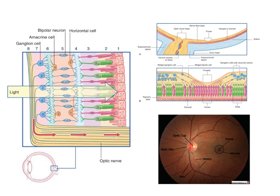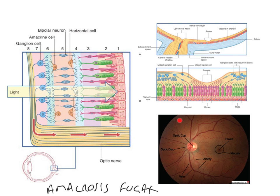Another condition you need to be aware of is amaurosis fugax — a sudden transient loss of vision. It's caused by a transient ischemic attack: a small embolus temporarily blocks the ophthalmic artery, which enters at the optic disc and branches out to supply all parts of the retina. The classic description patients give is like a curtain coming down over their vision, only to return again within some hours. This is caused by hypoxia of the retina. It's a really important clinical condition because it could be a prelude to a bigger stroke.